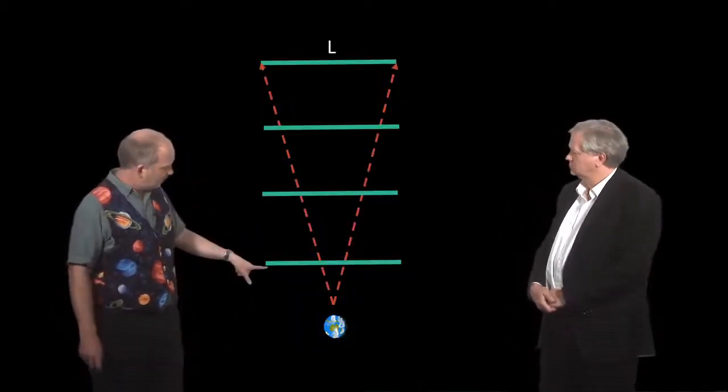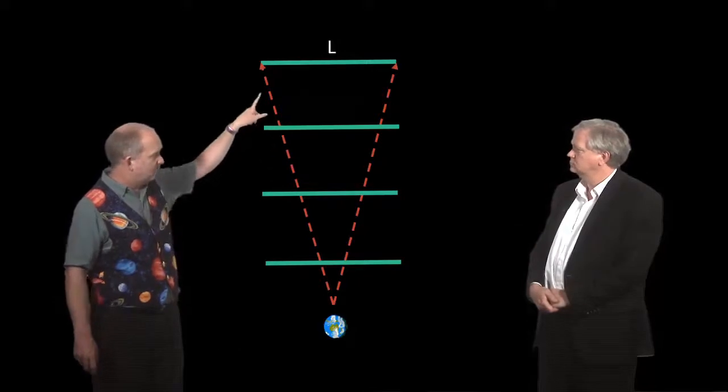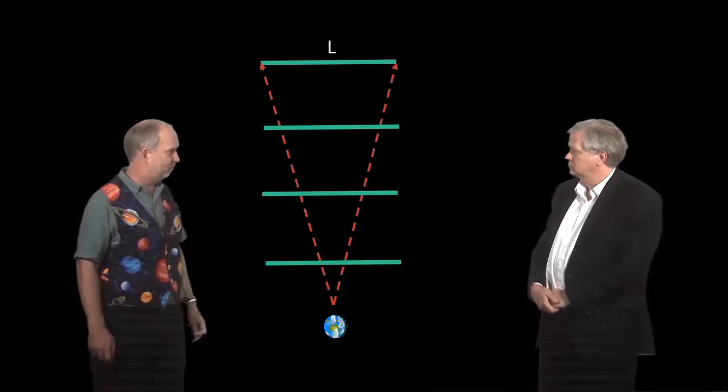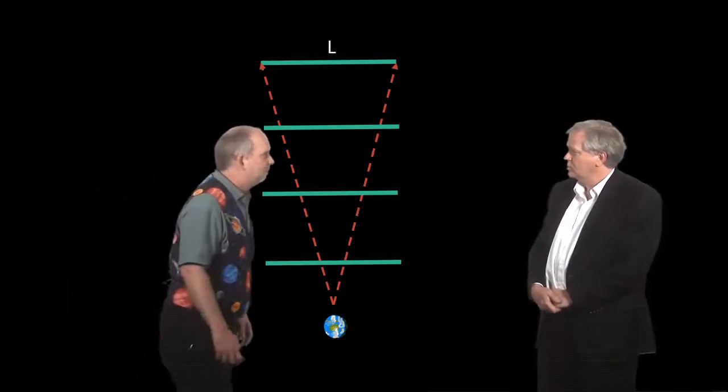And people have done that and are continuing to do this. And what that gives you is a standard ruler at a whole bunch of different distances. So, the nearby one, all the way out to one that's at the microwave background, red shifting of 1080.